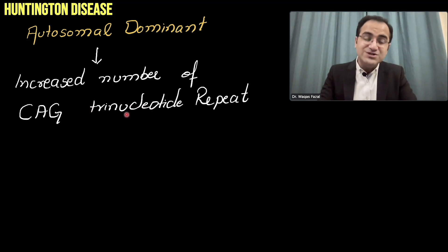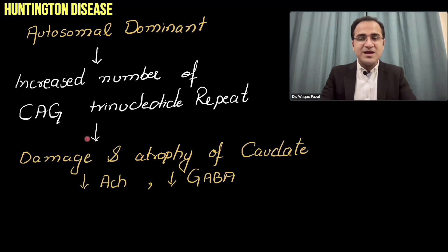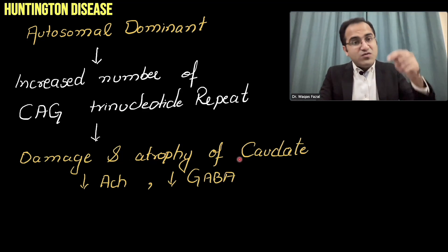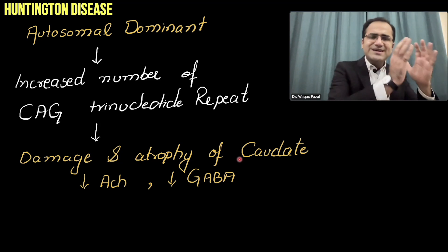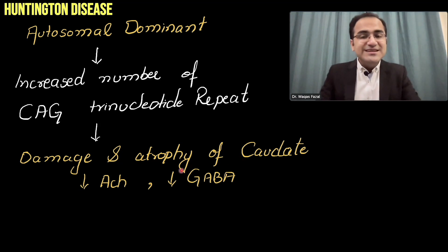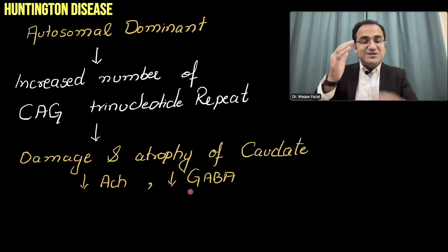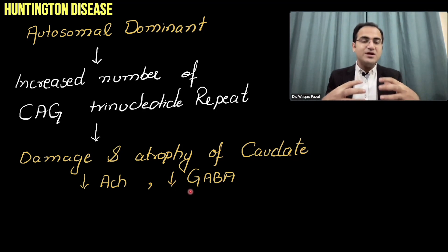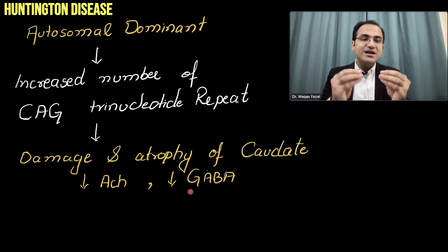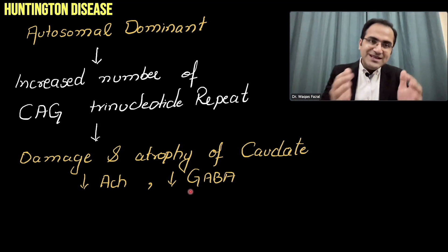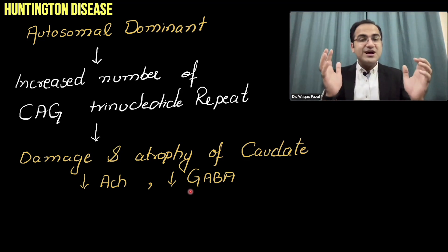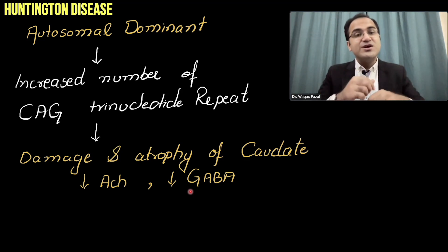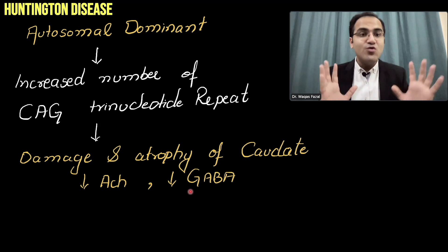The pathology involves atrophy of the caudate, part of the basal ganglia. This causes decreased GABA, which is an inhibitory chemical that normally suppresses abnormal movement. When GABA is low, movement becomes involuntary, unsynchronized, and uncoordinated — that is Huntington's chorea.